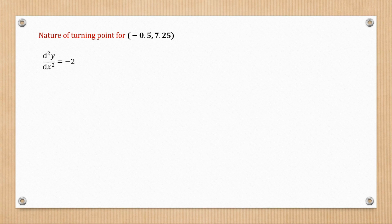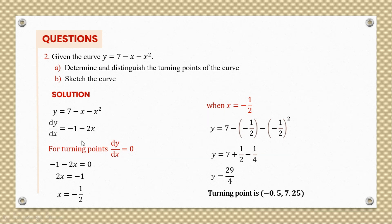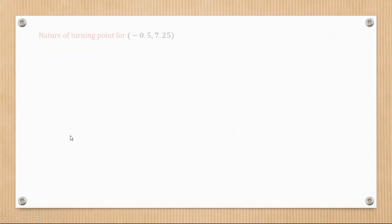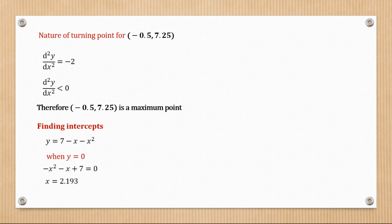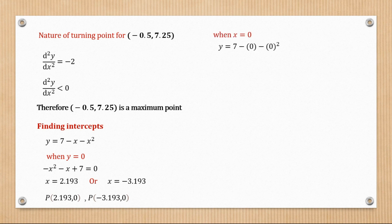The second derivative equals -2. Since -2 < 0, this turning point is a maximum point. For intercepts, when y = 0, solving gives x ≈ 2.193 or x ≈ -3.193. When x = 0, y = 7. So the intercepts are approximately (2.193, 0), (-3.193, 0), and (0, 7).